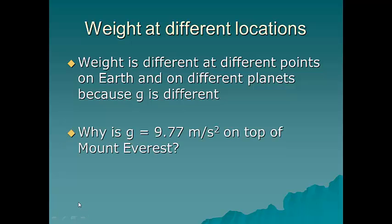So why would g be 9.77, which is less than 9.8, on the top of Mount Everest? So see if you can come up with an answer. We will talk about that next class. Make sure you do your summary for your Cornell notes.